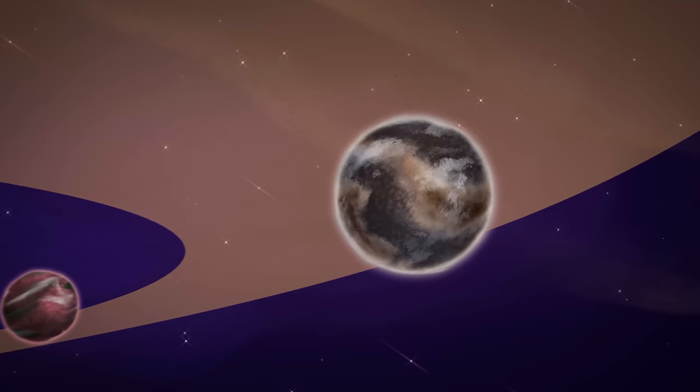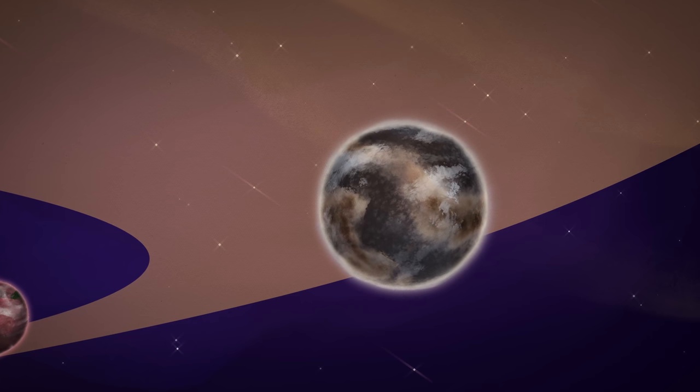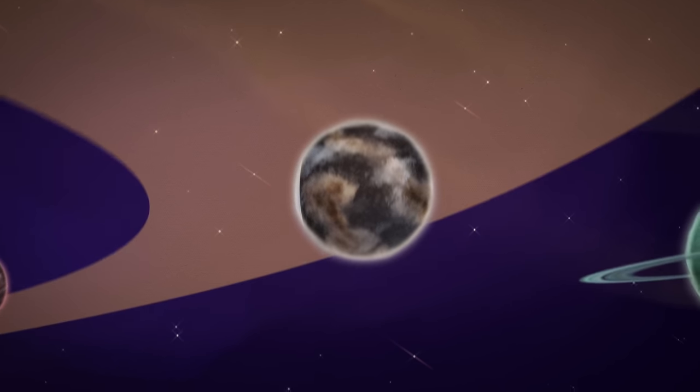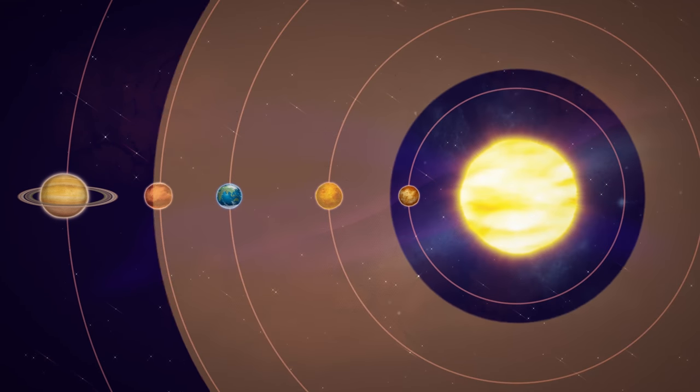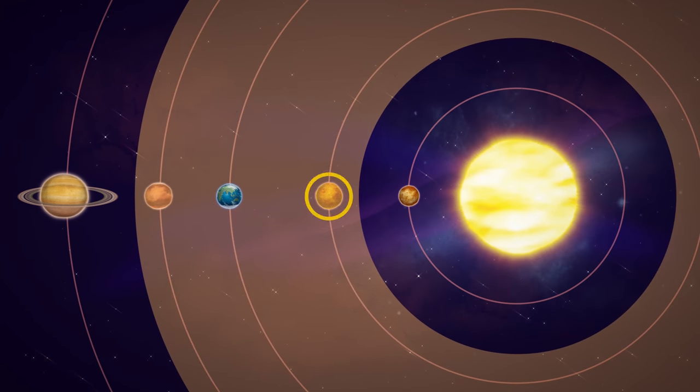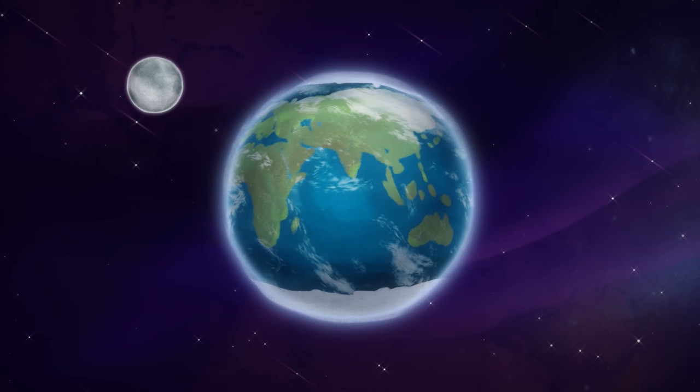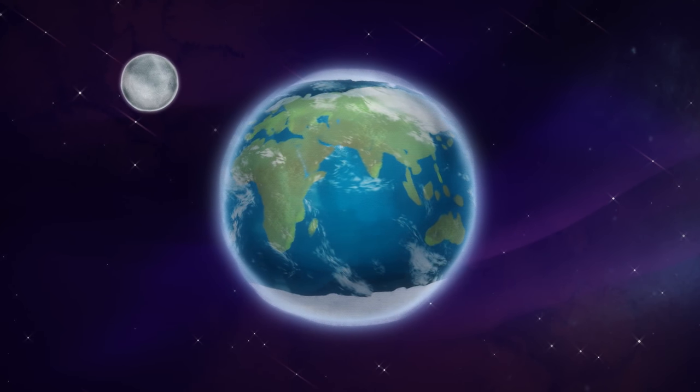It's the distance from a star where a rocky planet with an atmosphere could have liquid water on its surface. In our solar system, the habitable zone extends from around the orbit of Venus to around the orbit of Mars. Earth happens to be nice and comfy in the middle, but it takes more than just a good location.